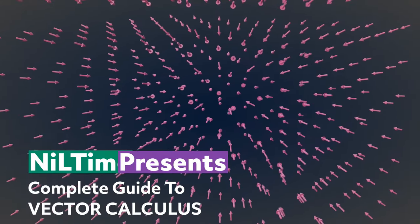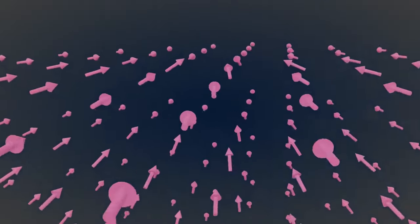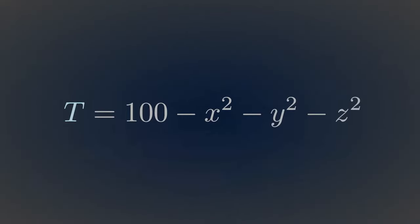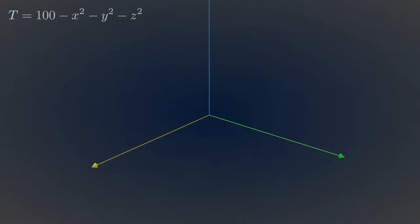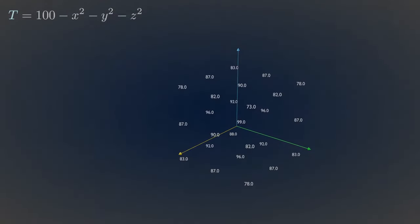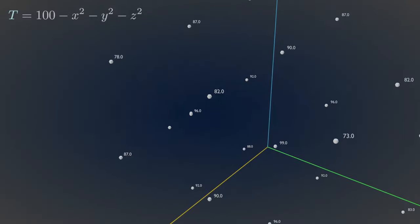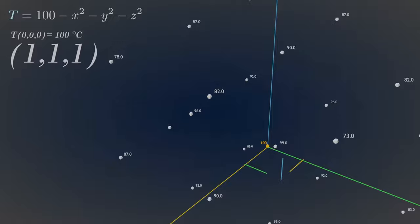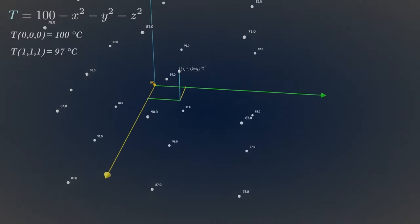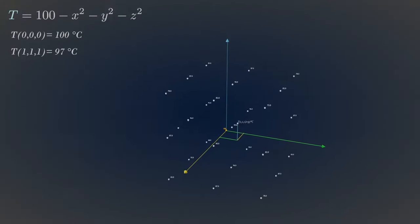Let's begin our vector calculus course with the introduction of a field. There are basically two types of fields: scalar fields and vector fields. You can take the example of this temperature field. This scalar field, or scalar function, associates a scalar value or a magnitude to every point in space. For example, at origin, temperature is 100 degrees Celsius. Similarly, at this location, temperature is 97 degrees Celsius. This scalar field only shows temperature reading at every possible point in space.